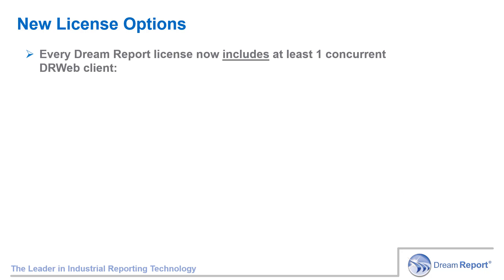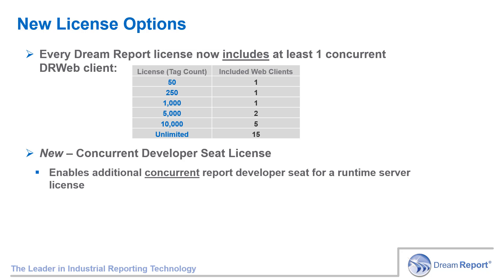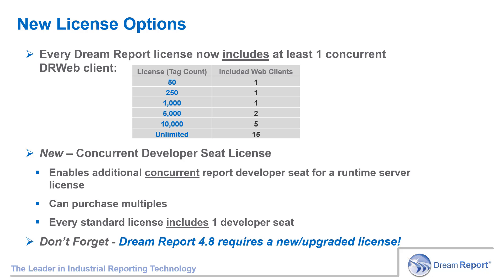The last thing to talk about is the new licensing options in 4.8. Every DreamReport license now includes at least one concurrent web client for the DreamReport web portal. So even if you're not sure if you want or need to use the web portal, you can try before you buy, and always add additional web clients later on. Here's the breakdown of included web clients by each base tag license. Your DreamReport license includes full development capabilities. The difference now in 4.8 is that it's a development seat that can be used locally on the main DreamReport node or from a remote development station by a single user at a time, and it can be accessed from different development stations as well. If you want additional concurrent development capabilities, you can buy additional concurrent development licenses which add to the one already included. We encourage you to download DreamReport 4.8 and explore these new capabilities. Just remember, 4.8 does require a new license, so first make sure to contact your DreamReport distributor to either upgrade your existing license to 4.8 or purchase a new license.